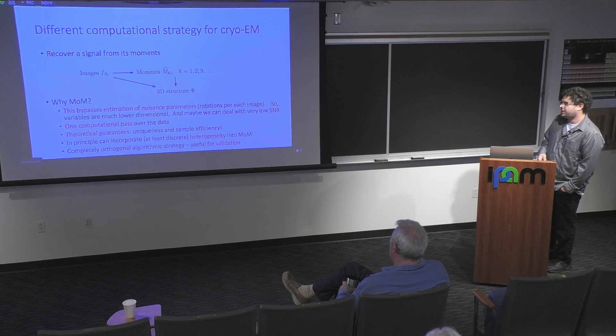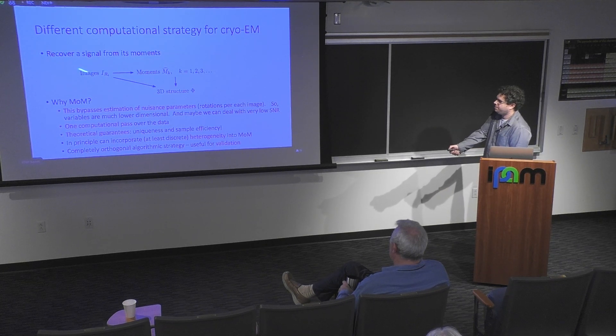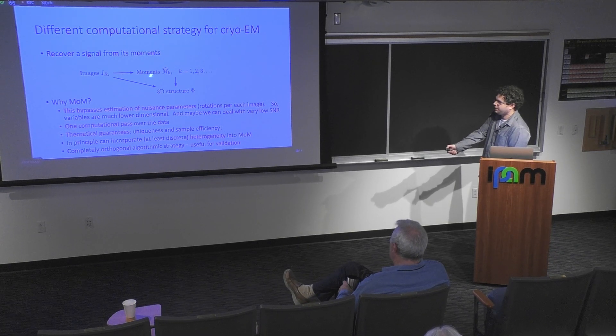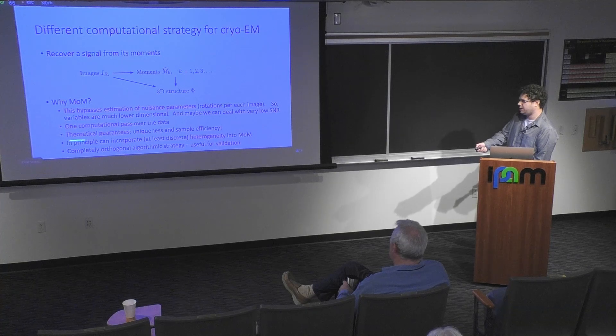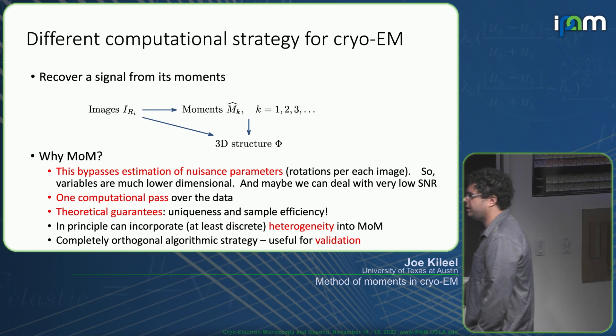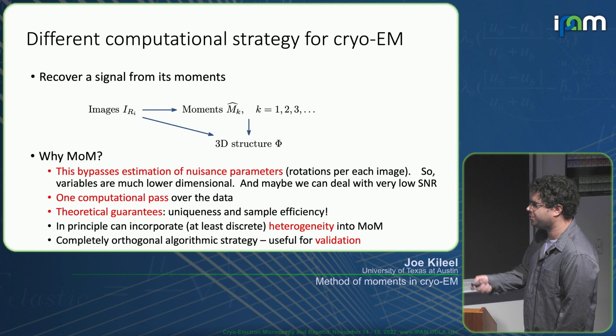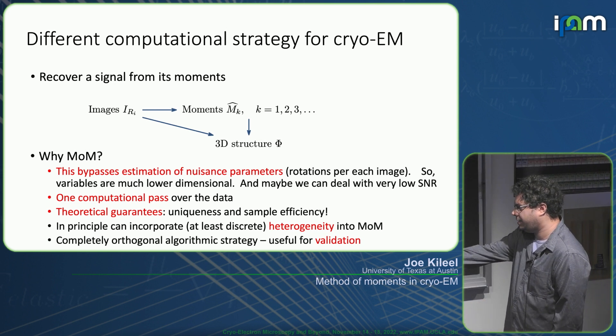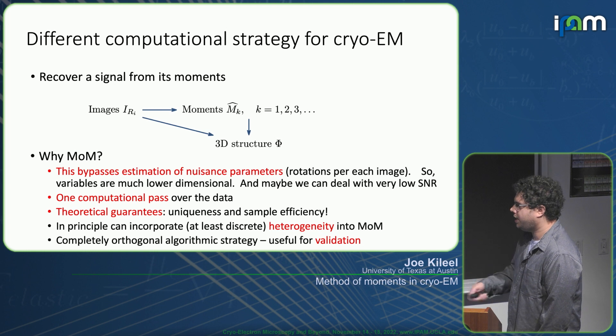As Tamir argued, possibly this can also deal with very low SNR. Another thing is that in principle you only need to do one pass over the data. To calculate these moments, you just go over the images and calculate these moments. Then you don't necessarily need to look at those images again. It's a single pass. One of the themes in this talk is that we actually can show some theoretical guarantees for the method of moments that, to my knowledge, aren't as present for EM-based approaches in cryo-EM. If you're interested in rigorous reconstruction, you want to be sure you're getting the right structure, then maybe the method of moments is attractive. In particular, uniqueness and sample efficiency.